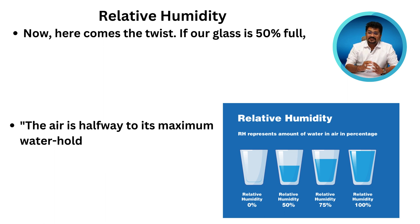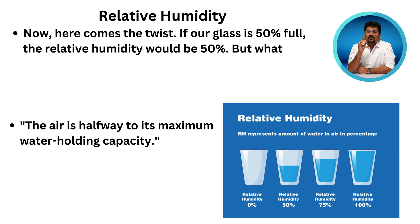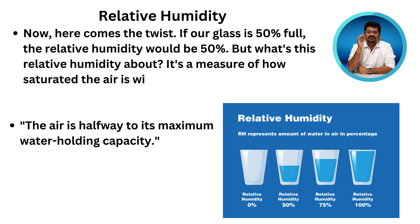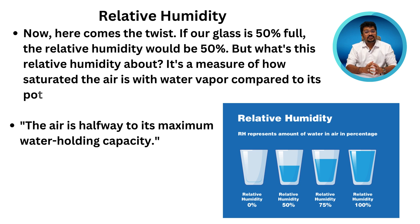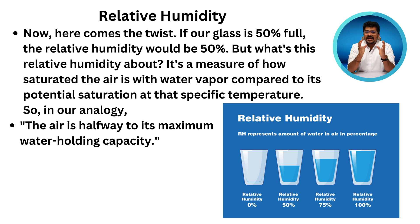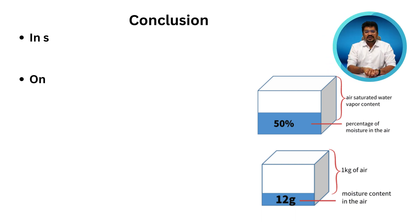Now, relative humidity. If our glass is 50% full, the relative humidity would be 50%. Relative humidity is a measure of how saturated the air is with water vapor compared to its potential saturation at that specific temperature. In our analogy, it's like saying the air is halfway to its maximum water-holding capacity.